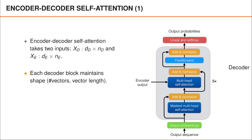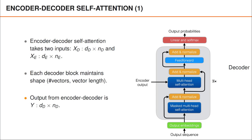The output vectors from all layers also have the same length as the input to the first self-attention layer. Consequently, the output from the encoder-decoder layer is another matrix, here denoted capital Y, of the same size as capital XD — that is, DD times ND. Even though it takes two matrices as input, it still outputs one vector for each input vector to the entire decoder layer, and the dimensions of the output from the encoder do not influence the dimensions of Y.